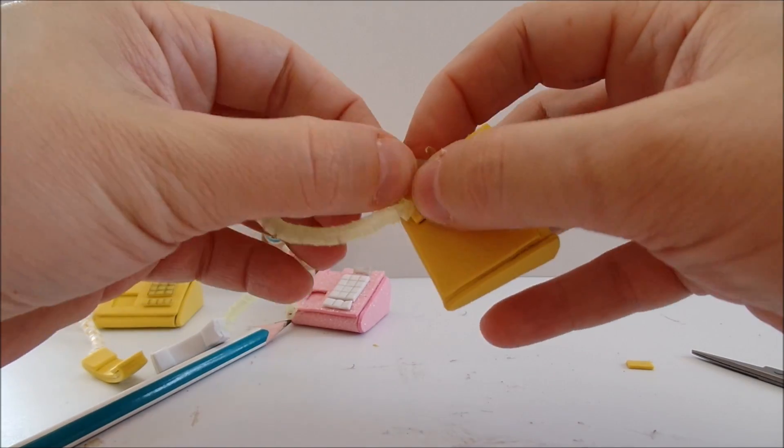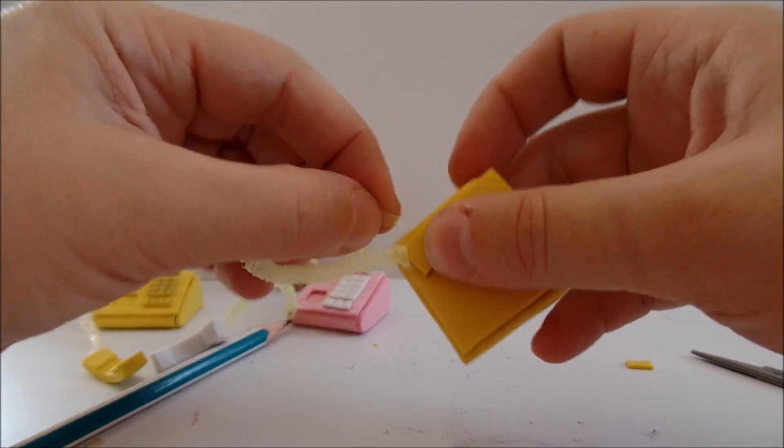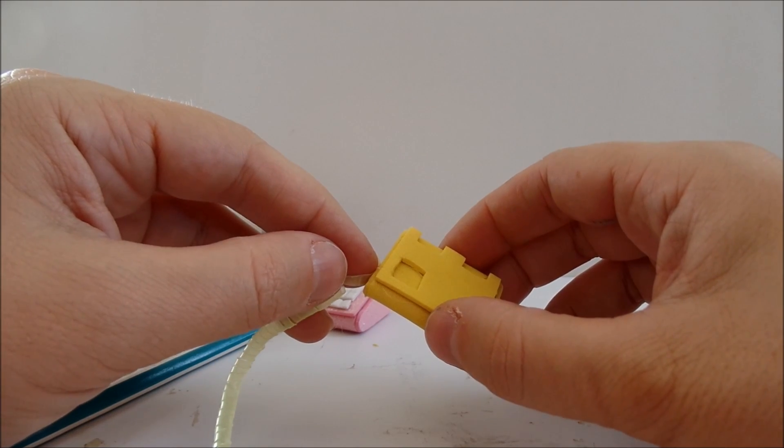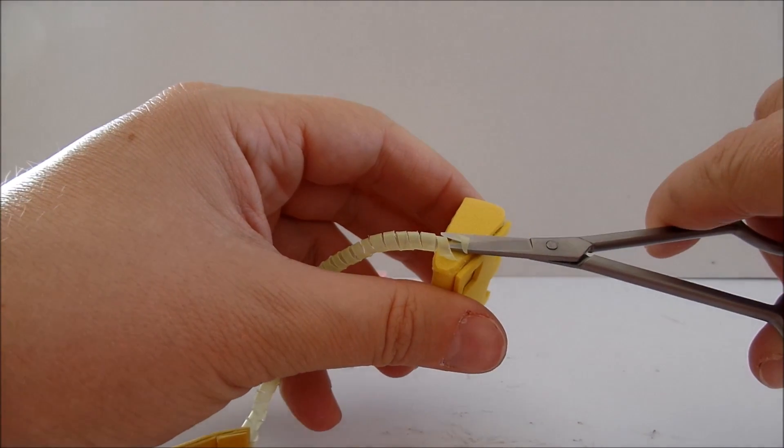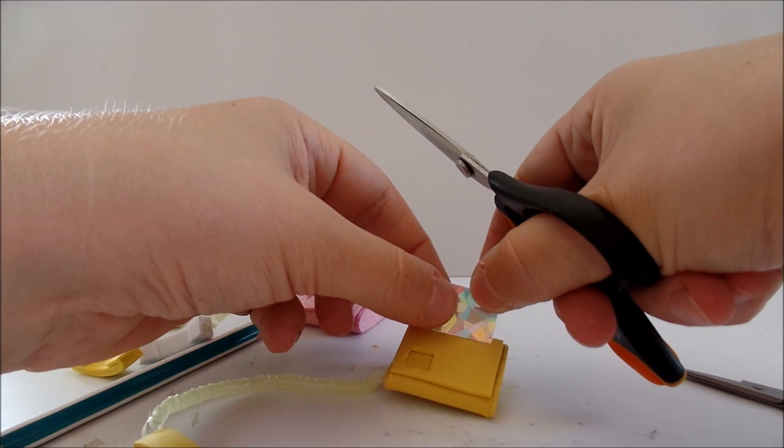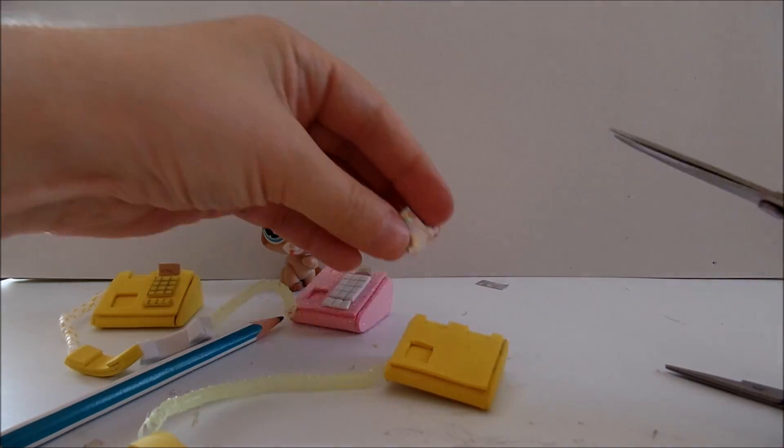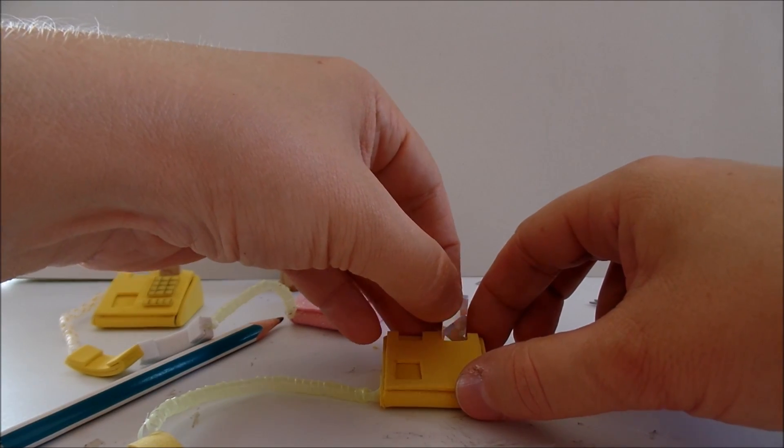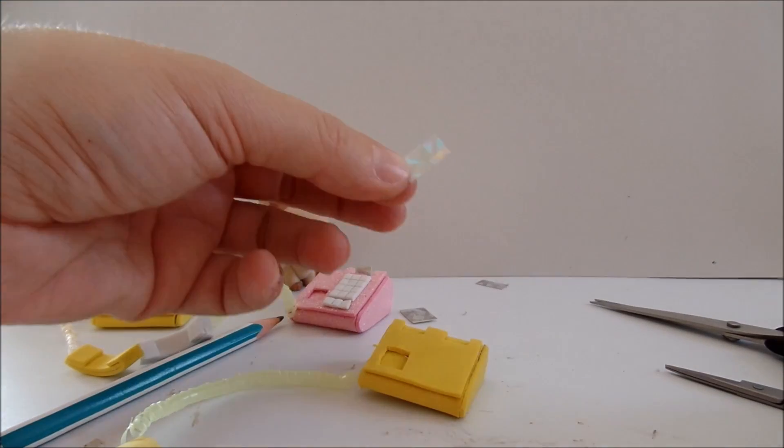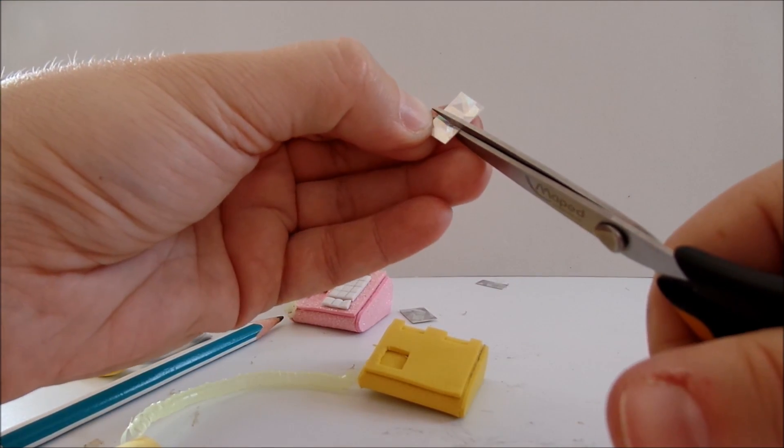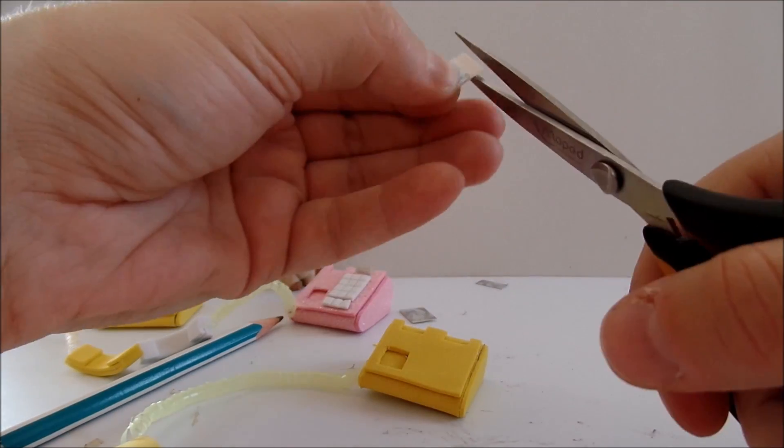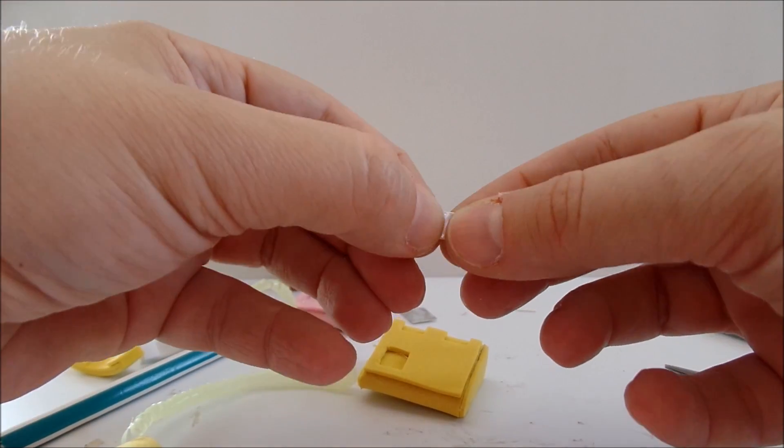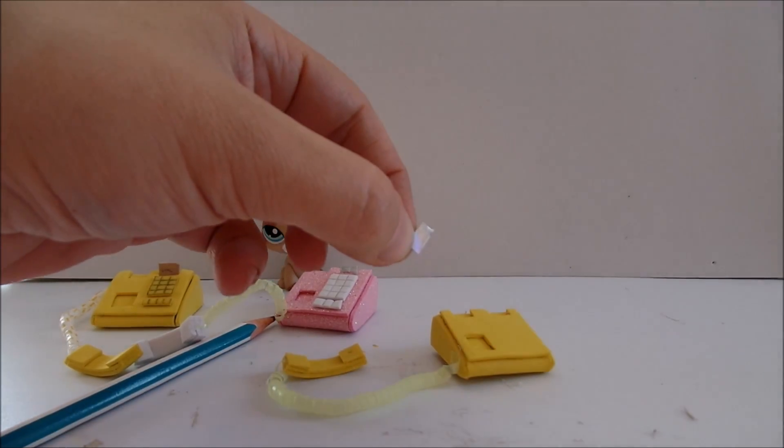I will glue the cord somewhere on the side. I'll trim off the excess. I will take a piece of something, a piece of cardboard maybe. Something that you would like to see as your screen. I'm using some glittering piece of cardboard that I have. I'll glue two pieces together. And then I glue it inside.